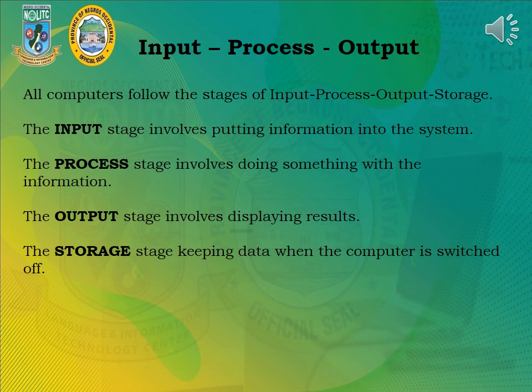All computers follow the stages of input, process, output, and storage. The input stage involves putting information into the system. The process stage involves doing something with the information. The output stage involves displaying results. The storage stage involves keeping data when the computer is switched off.